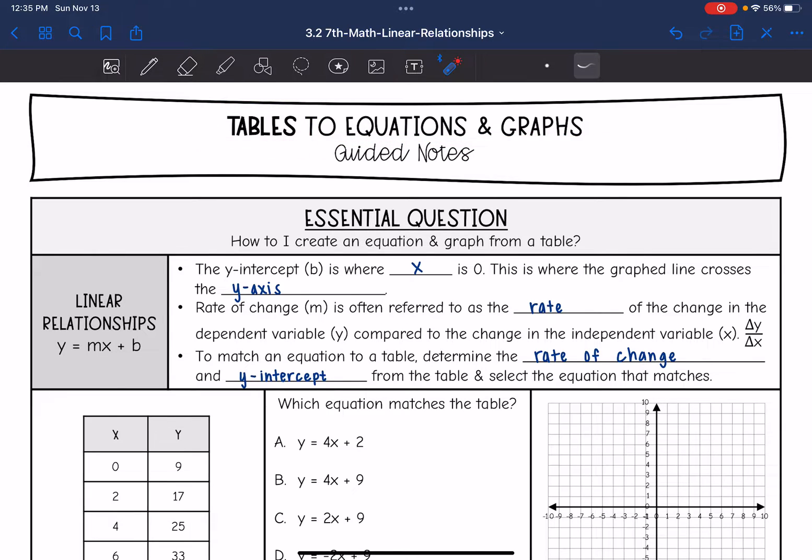So remember a linear relationship is y equals mx plus b. That b value is the y-intercept, it is where x is 0. That is where the graphed line crosses the y-axis. And then the rate of change is m, that coefficient of x, that's often referred to as the rate of change in the dependent variable y compared to the change in the independent variable x. We write it like that, change in y over change in x.